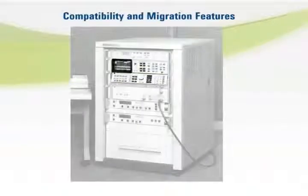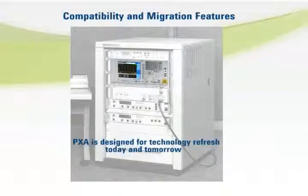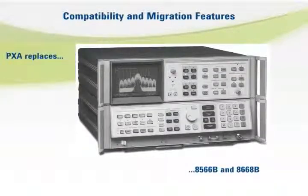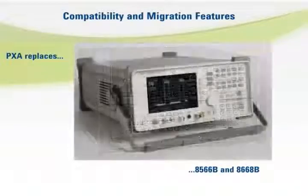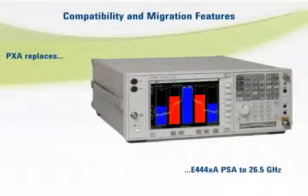To make migration and upgrades practical, new analyzers must easily find a home in current systems. The high-performance PXA was designed to add the benefits of a new analyzer to existing test systems containing older HP and Agilent high-performance spectrum analyzers. The PXA can be configured as a drop-in replacement for several different analyzers, improving measurement throughput, test margins, and supportability, while speeding migration time and reducing risk.